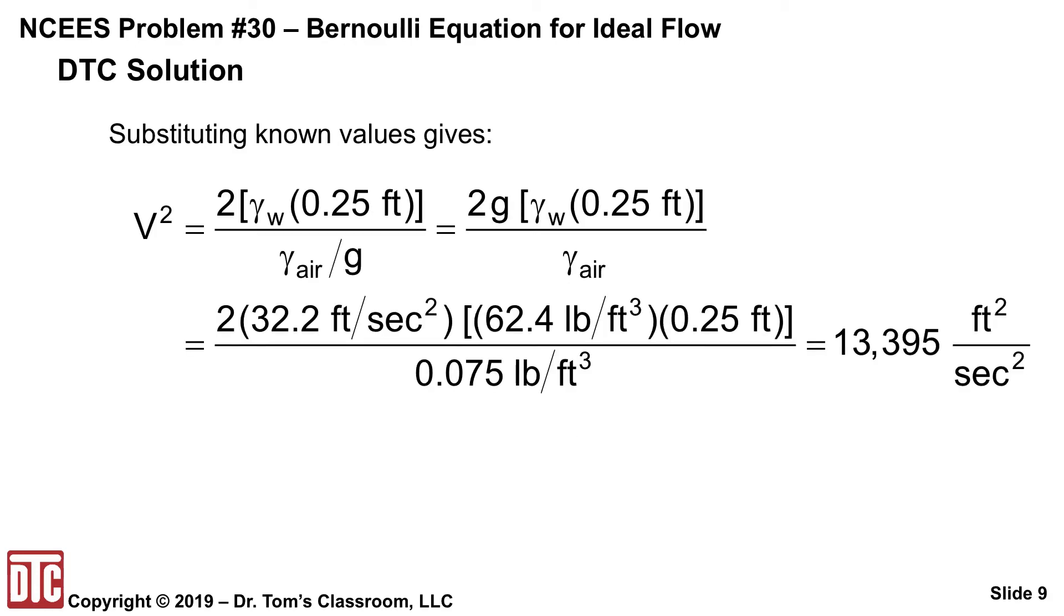I've just repeated this particular equation and then brought the G up into the numerator. So I got 2G times the quantity gamma of water times 0.25 feet divided by the gamma of air. If we put in 2 times 32.2, the 62.4 pounds per cubic foot for the gamma of water times 0.25 divided by the gamma of air, which is 0.075 pounds per cubic foot, what we'll end up with is feet squared per second squared as our units. The pounds cancel and the foot cubes cancel.